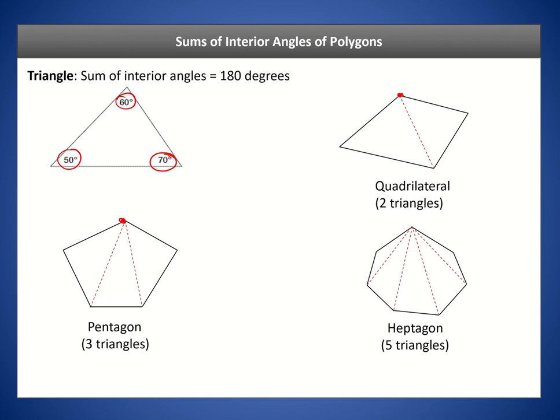Hopefully you see a pattern by now. For a quadrilateral with four sides we have two triangles; a pentagon with five sides gives us three triangles; and a heptagon with seven sides gives us five triangles. The pattern is: take the number of sides and subtract two. That gives you the number of triangles, and this is our formula n minus 2, where n is the number of sides.